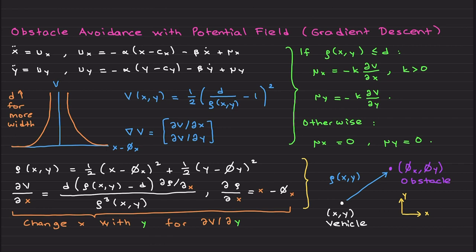I am considering a robot with double integrator dynamics, and I am choosing the control signal for x-axis like this: minus alpha x minus cx. This is the damping of the velocity. x is the position, cx is the command.